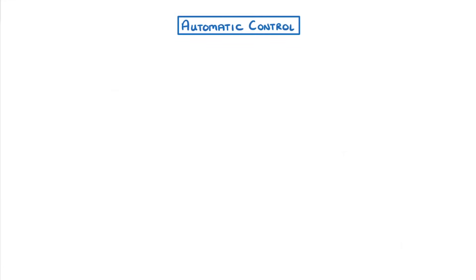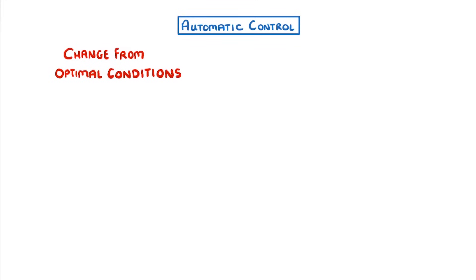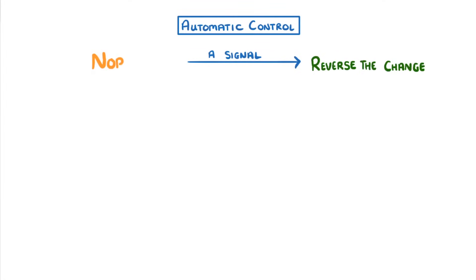To do this, our body uses automatic control systems that can basically recognise when there's a change from optimal conditions, and then send a signal to reverse that change so that the levels go back to normal.